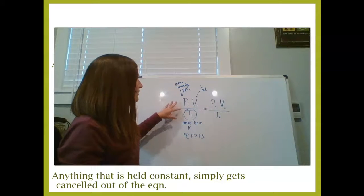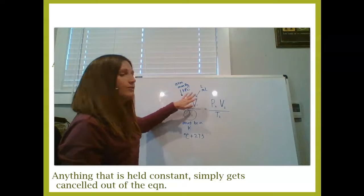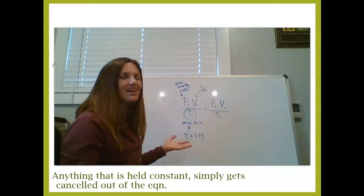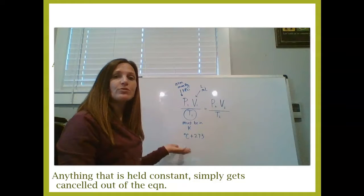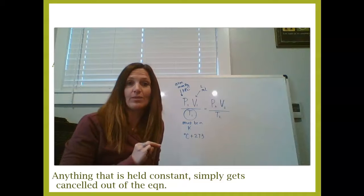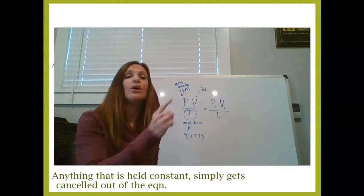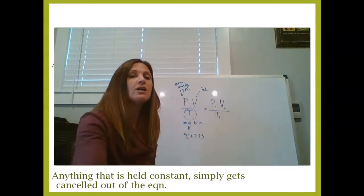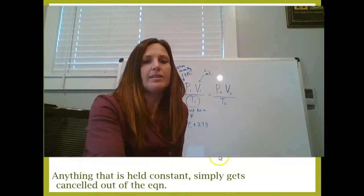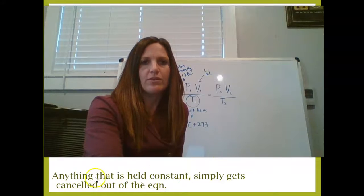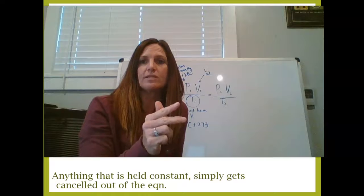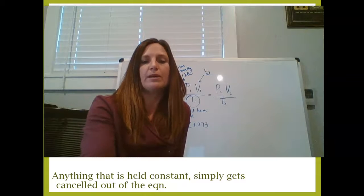So in that way, you're able to see the different versions of the different laws, they're all combined in the combined gas law, which is nice, because then what you can do is you can actually use the combined gas law to solve for any of the three initial laws that we learned, Boyle, Charles, or Gay-Lussac. Anything that's held constant simply gets canceled out of the equation, which will return you to Boyle, to Charles, or to Gay-Lussac's law, depending on what you hold constant.